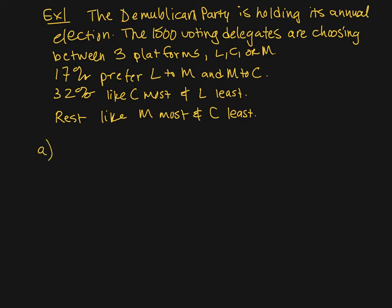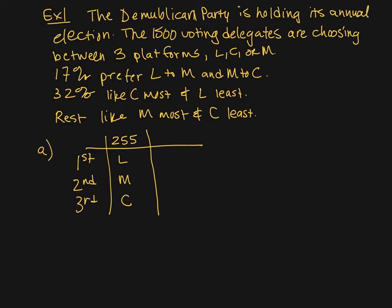We're going to write the first, second, and third choices. The first group prefers L the most, then M, then C — that's 17%. We calculate 17% of 1,500 and get 255 voters. It's important that we put the number of voters here rather than percentages. Next, C the most and L the least — that leaves M in the middle. That's 32%, which we calculate as 480. The rest: we take 1,500 minus what we have so far, and that's 765.